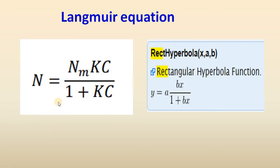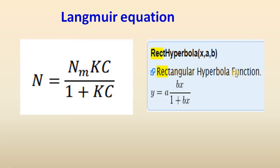A typical form of the Langmuir equation can be written as: n = (nm · k · c) / (1 + k·c), where n is the amount adsorbed, nm is the maximum amount adsorbed, k is the Langmuir constant, and c is the equilibrium concentration. If we compare this equation with the rectangular hyperbola function, we see that n equals y, nm equals a, k equals b, and c equals x. So if we fit the Langmuir equation with the rectangular hyperbola, we can easily calculate the Langmuir isotherm equation parameters.